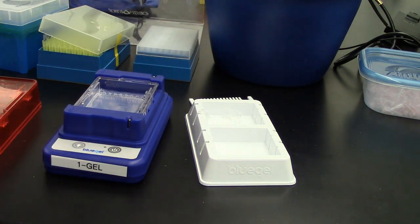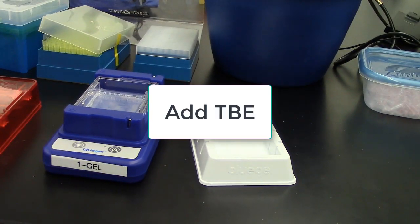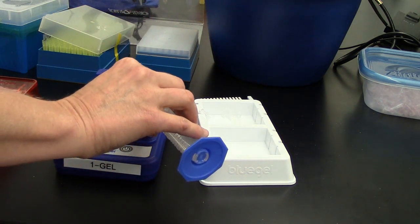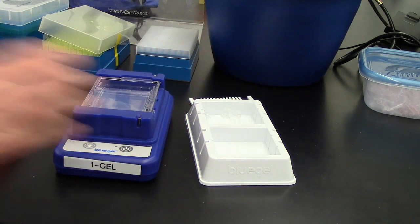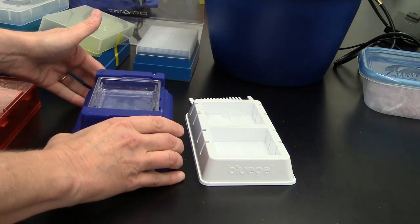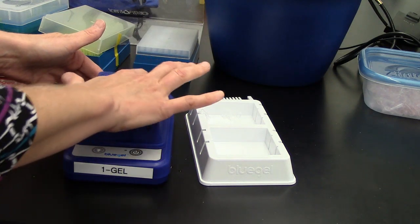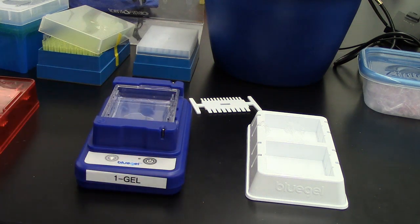Now you're ready to add TBE onto this. I'm going to add 25 milliliters of 1X TBE into the electrophoresis chamber. I'm going to rock it a little bit to make sure the entire gel is covered and all the wells are covered. Now we're ready to load our samples.